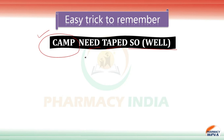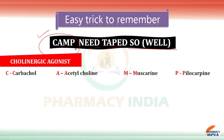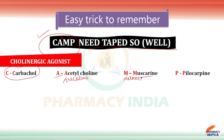For the cholinergic agonists, note there are two A's and two M's. In cholinesters: C stands for carbachol, A for acetylcholine. The two M's — first M is for muscarine and the second M stands for methacholine. And the last one, P, is for pilocarpine. That gives us CAMP.